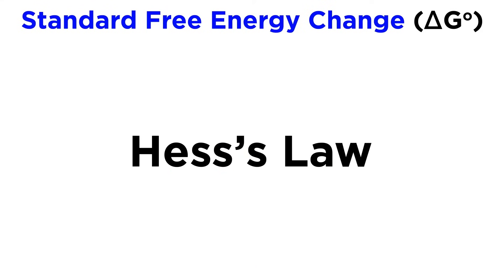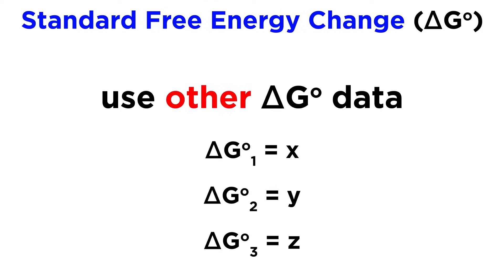The second method is essentially identical to Hess's law, just applied to free energy instead of enthalpy. If we know the standard free energy change for several other reactions, if we can combine those reactions to produce the one we want by manipulating them in some way, then manipulating the associated delta G values in the same way will give us the delta G for the reaction in question.